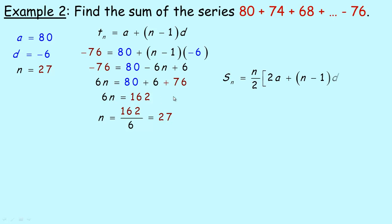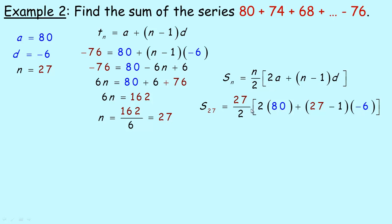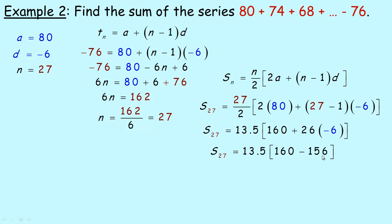Now in the sum formula we can fill in everything since we know n = 27. S_27 = 27/2 × (2(80) + (27−1)(−6)) = 13.5 × (160 + 26×(−6)) = 13.5 × (160 − 156) = 13.5 × 4 = 54. So the sum of the first 27 terms is 54. This is a fairly small sum because the series has many positive terms that go down toward zero, then many negative terms, so a lot of the positives and negatives cancel each other out.